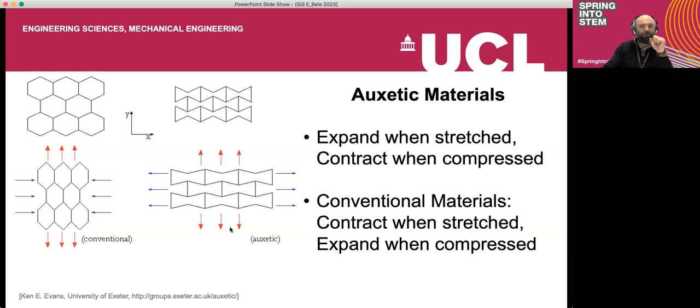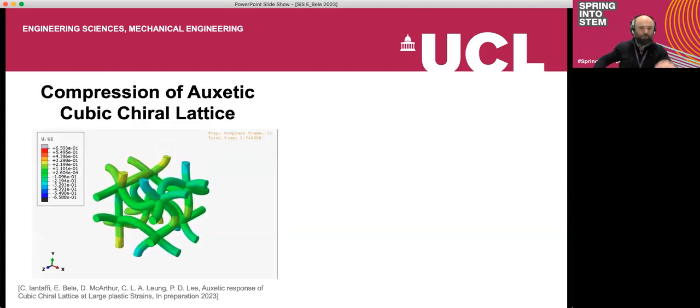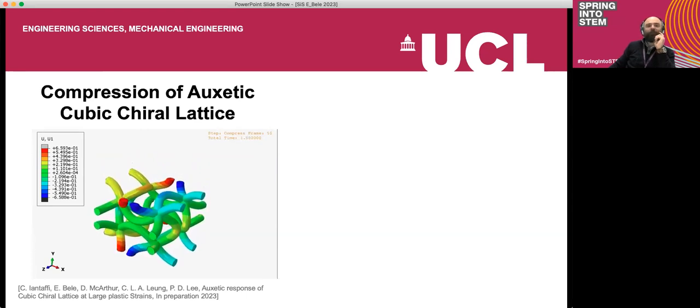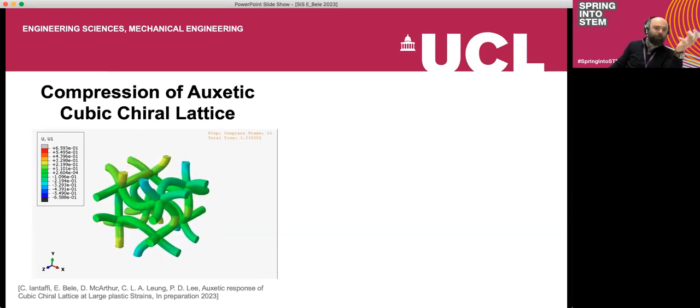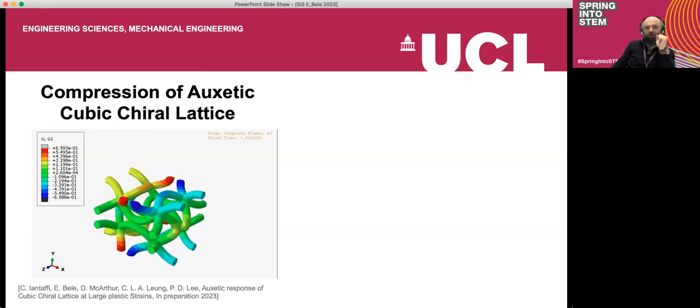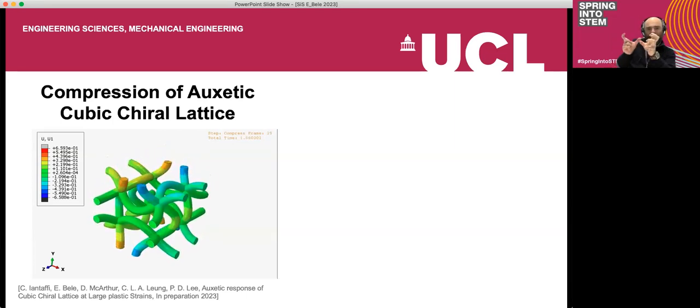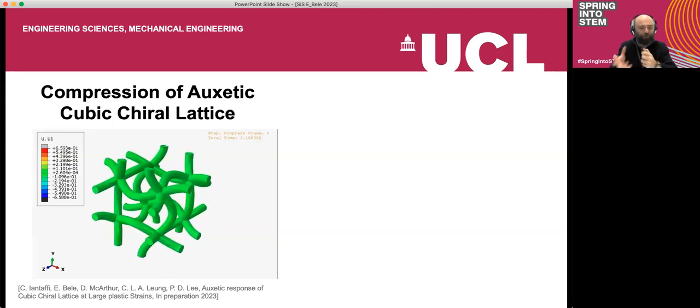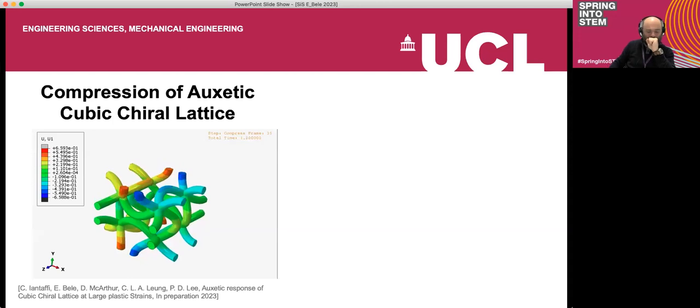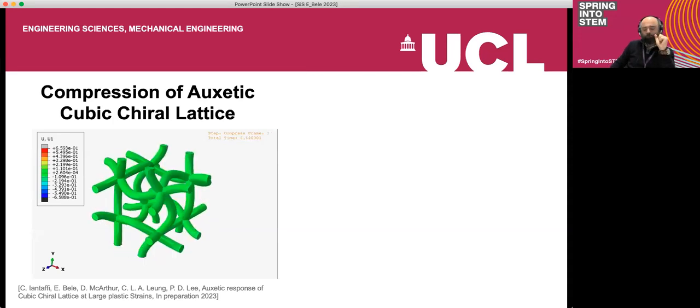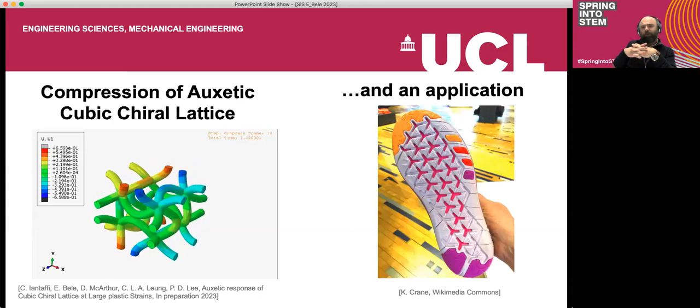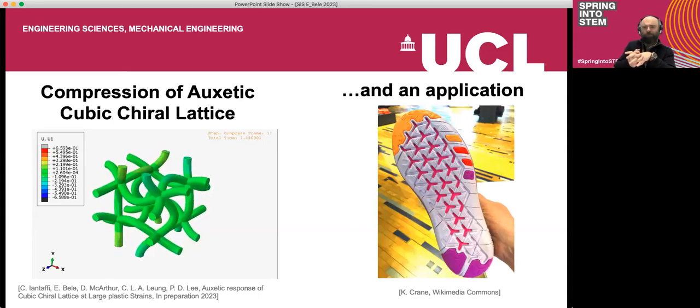It's something strange but can be done by this principle of engineering materials. This is a design where when you pull it up, these beams straighten and the entire structure expands. This is an example of our research looking at a cubic chiral lattice. When you compress it in one direction, these beams bend and constrict the volume so the lattice becomes smaller and smaller.